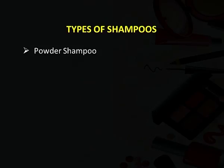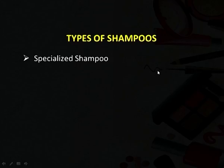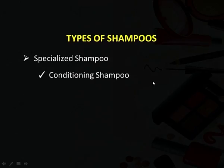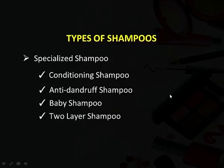Shampoos can be present in different forms and are classified as powder shampoo, liquid shampoo, lotion shampoo, cream shampoo, jelly shampoo, and aerosol shampoo. They can be applied in any form, but the most commonly used form is the liquid shampoo. Shampoos can also have specialized functions: conditioning shampoo if they have conditioners mixed in, anti-dandruff shampoo if they contain an anti-dandruff substance, baby shampoo which should be very soft and applied only for small babies, and two-layer shampoos.